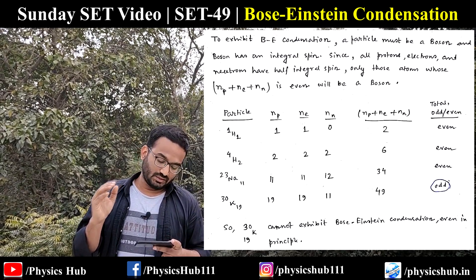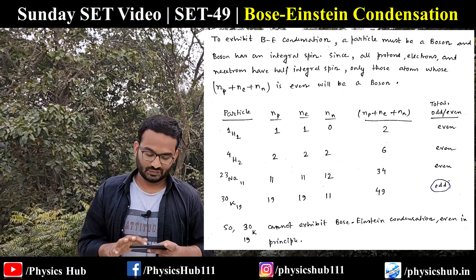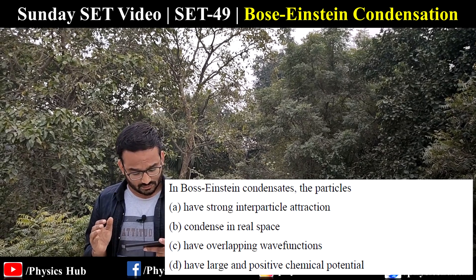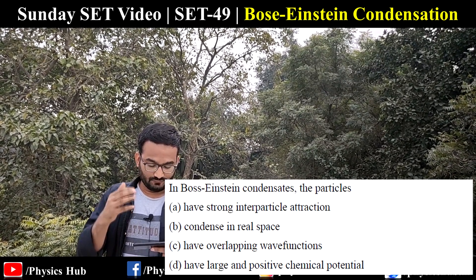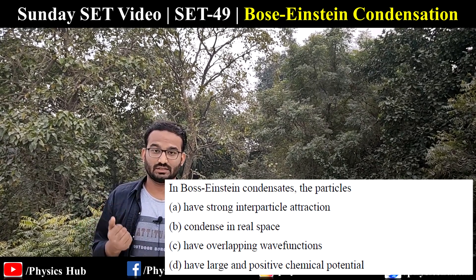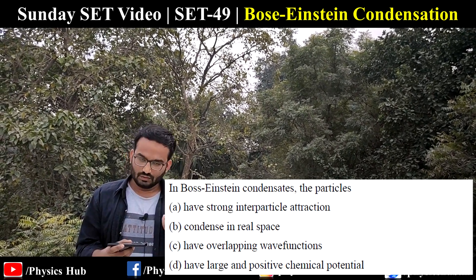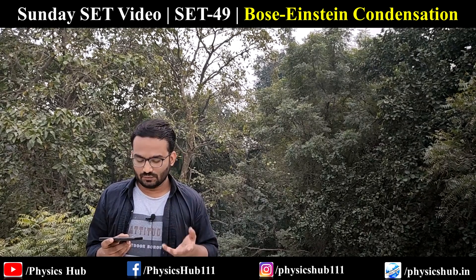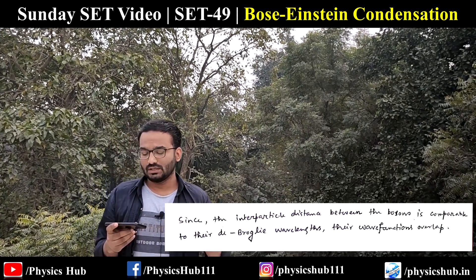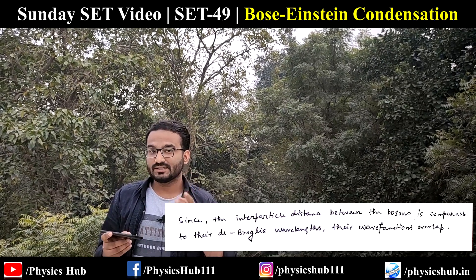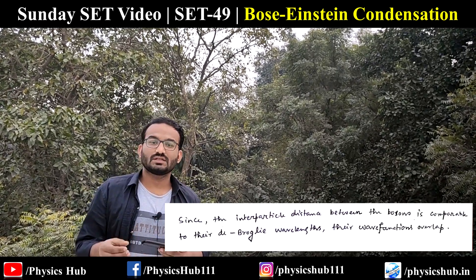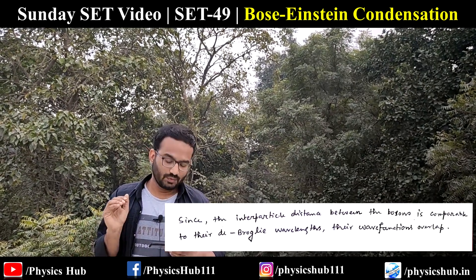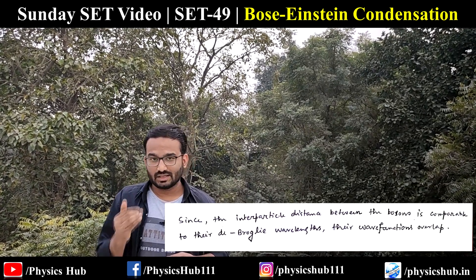So ³⁰K₁₉ is the atom which does not exhibit Bose-Einstein condensation. Now, question three: in Bose-Einstein condensation, the particles — which of the four options is correct? The solution involves concept: since the interparticle distance between the bosons is comparable to their de Broglie wavelengths, their wavefunctions must overlap. So in Bose-Einstein condensation the particles' wavefunctions overlap, and option C is the correct option.